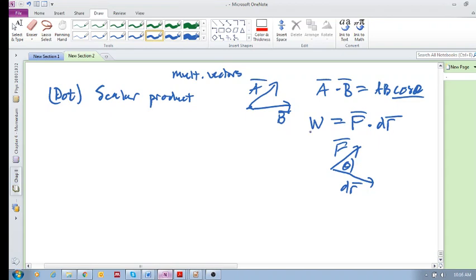It was a scalar. Now we want to look at something called the vector product, also called the cross product.